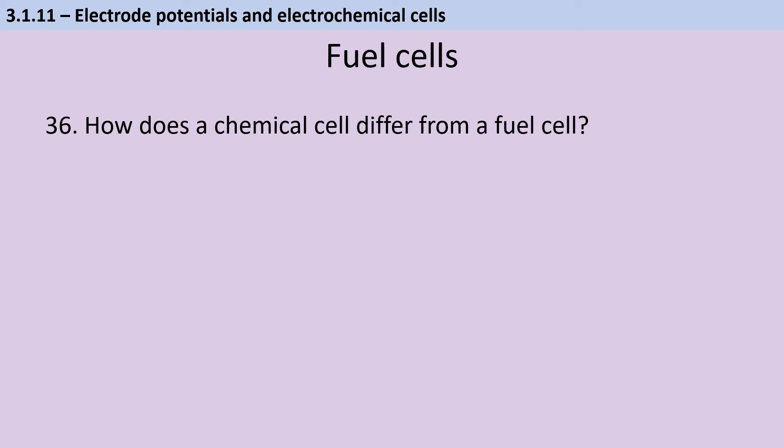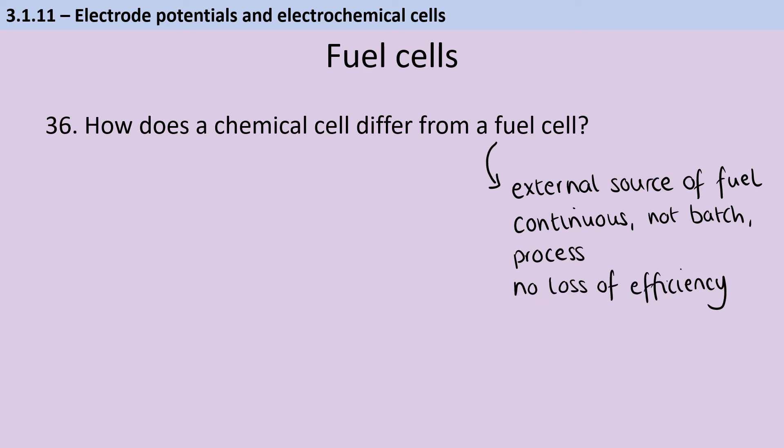Fuel cells are supplied with an external supply of fuel. And so this means that they can work as a continuous process rather than a batch process because fuel is always being supplied and therefore it can just keep on going. And this means that there's no overall loss of efficiency in the way that there is for a conventional chemical cell as it runs out of fuel.